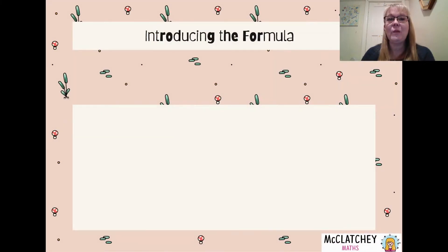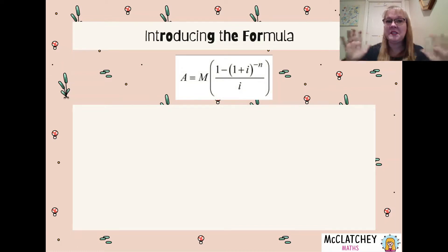Let's have a quick look at what the formula looks like on the Queensland QCAA formula sheet for general mathematics. A equals M, whole lot of stuff going on in brackets and we've got the letter i, we've got the letter n and we've got some negative powers. Looks a little bit scary but not so much so.